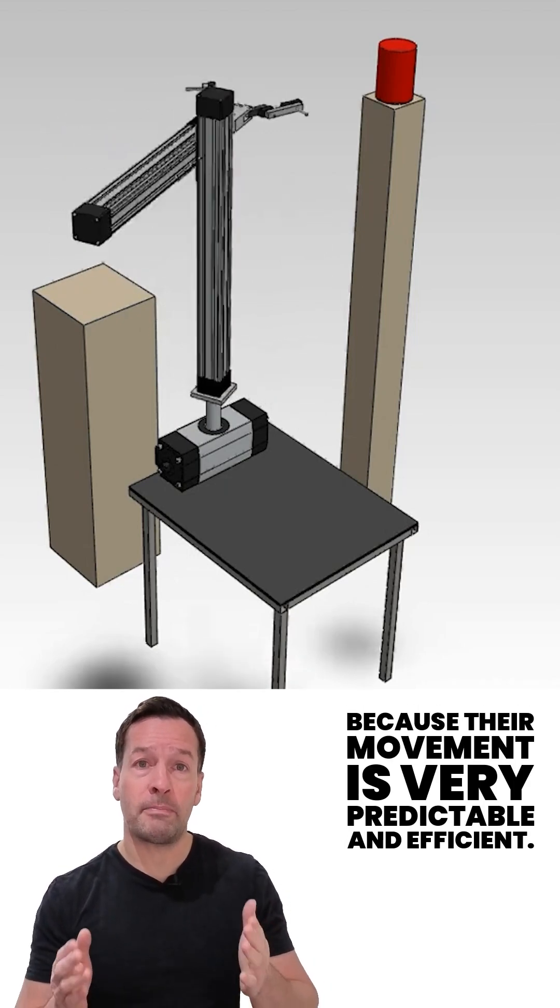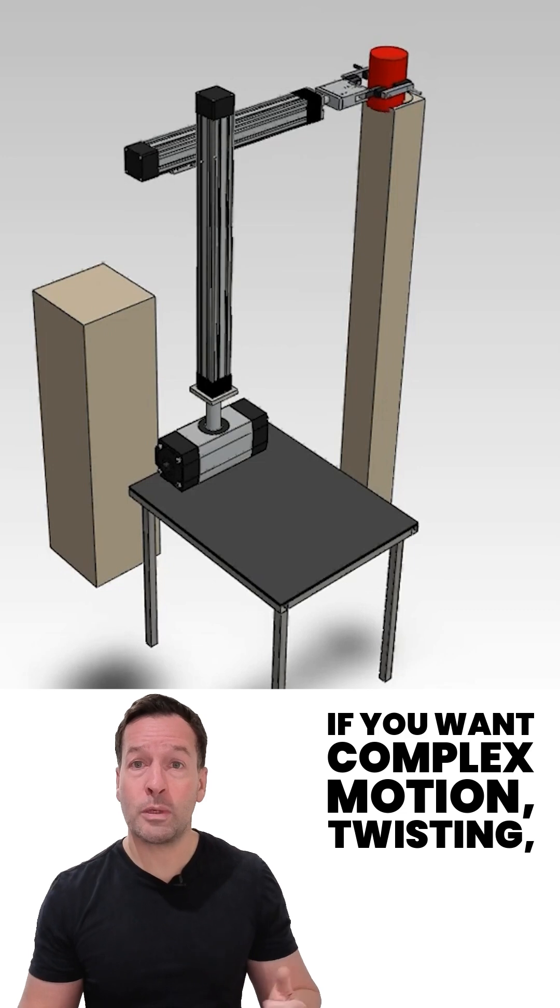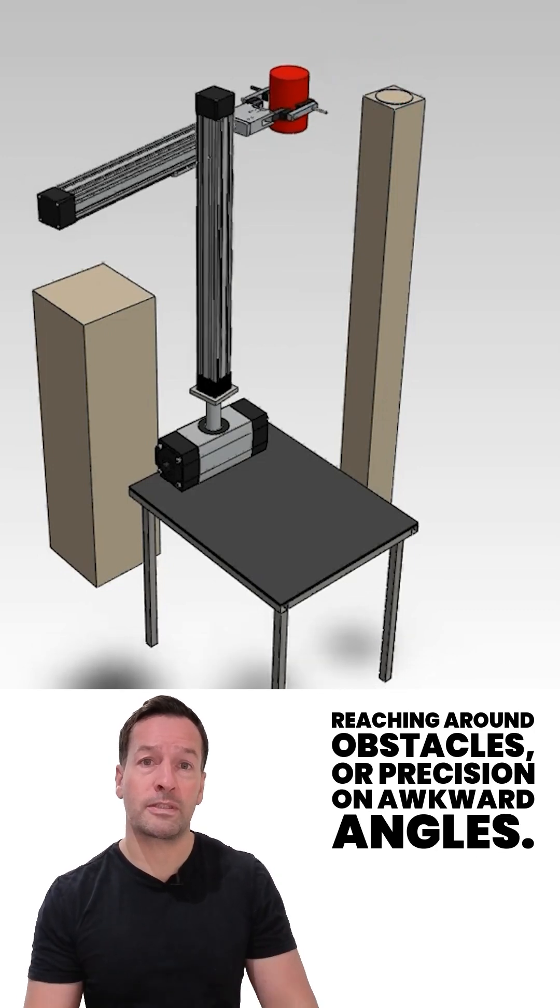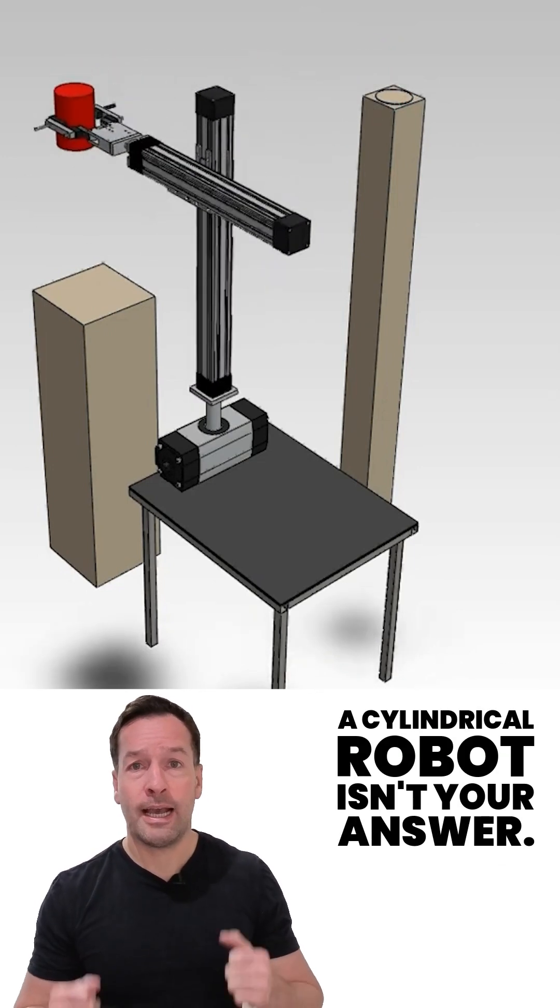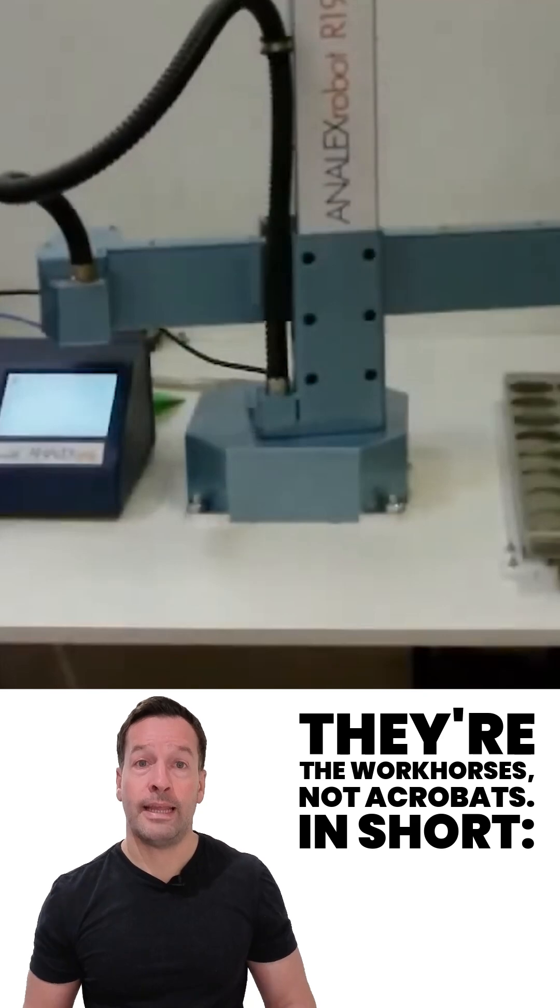Their movement is very predictable and efficient. But of course, they've got limits. If you want complex motion, twisting, reaching around obstacles, or precision on awkward angles, a cylindrical robot isn't your answer. They're the workhorses, not acrobats.